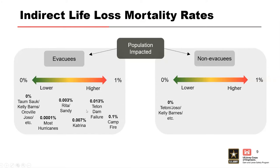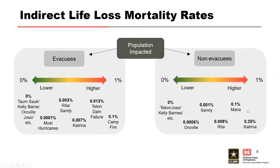Looking at the non-evacuees group — people in the path of the flood or outside it who lose power — we have these fatality rates, and Hurricane Maria and Hurricane Katrina are our highest fatality rate estimates. Katrina had a significant issue with prolonged exposure to extreme temperatures — a lot of people lost their lives that way. Maria had an extended power problem; there were parts of Puerto Rico that didn't get power back for a year, which is rather extreme.